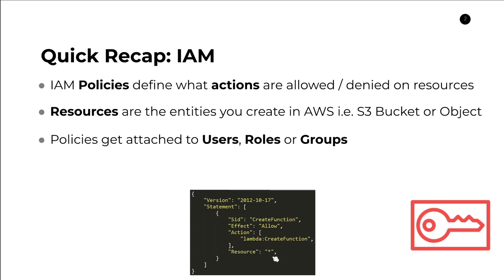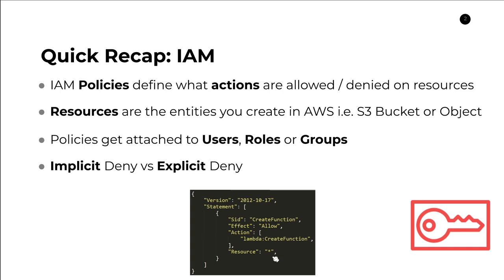Now one other thing about IAM that's important to realize is that there's a concept of implicit denies and explicit denies — these are two very different things. An implicit deny simply means that if you are not given the permission to do something through a policy statement, then you will not be able to do it. So in other words, if our user does not have a policy statement that allows us to create a function, then we will not be able to do it. If you're not given the permission to do something, you are not allowed to do it — it's implicit.